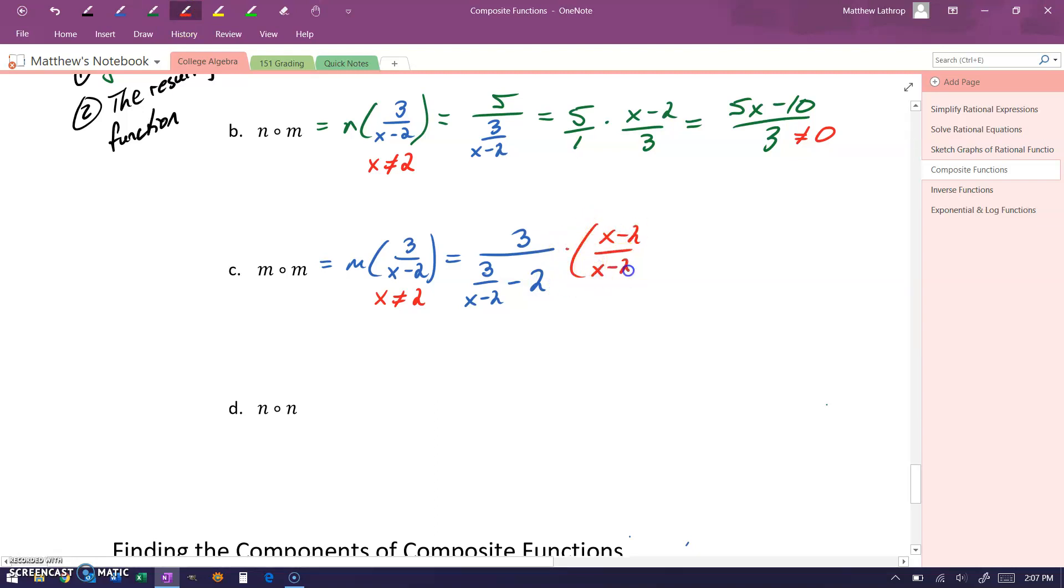Which we can multiply by x minus 2 over x minus 2 to simplify our rational function. So we'll get 3 times the quantity x minus 2 over 3 minus 2 times the quantity x minus 2.